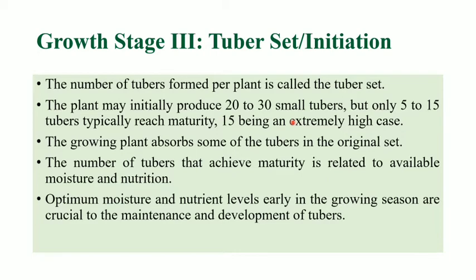The number of tubers that achieve maturity is related to available moisture conditions and nutrition in the soil. These are important factors for tubers achieving maturity. Optimum moisture and nutrient levels early in the growing season are crucial for the maintenance and development of tubers, so soil moisture and nutrient levels should be monitored carefully for the crop.